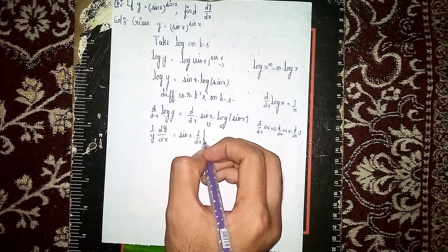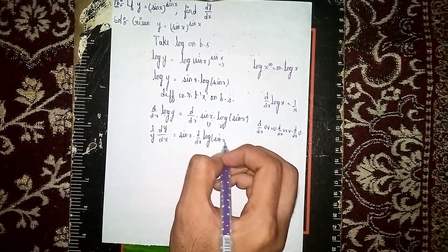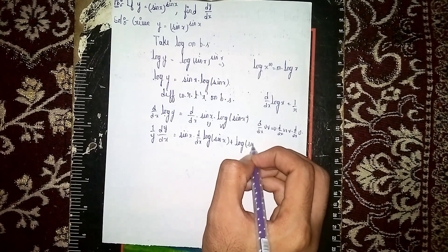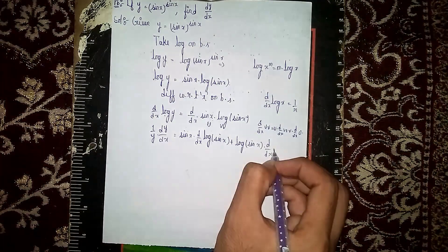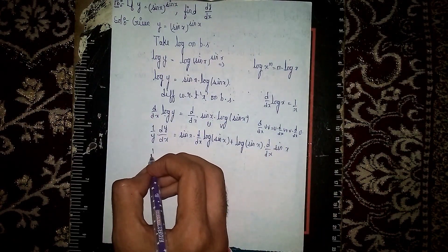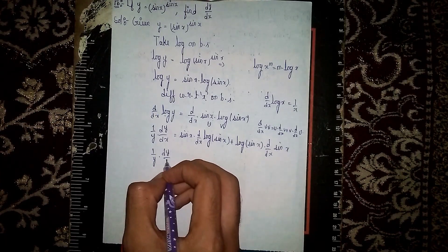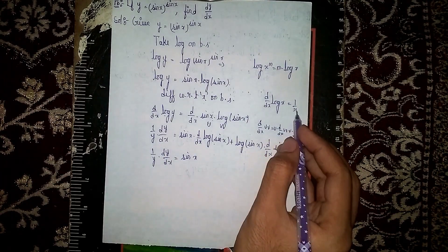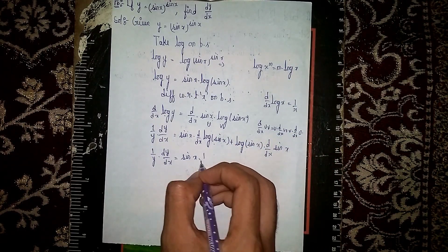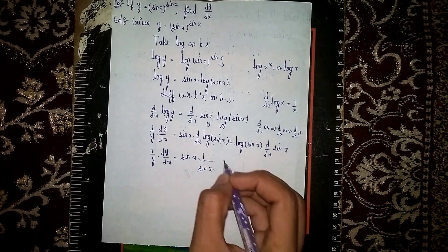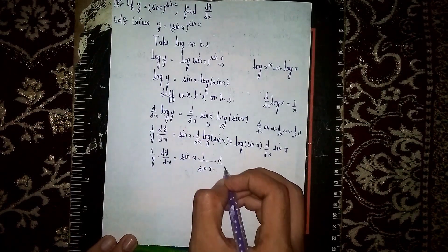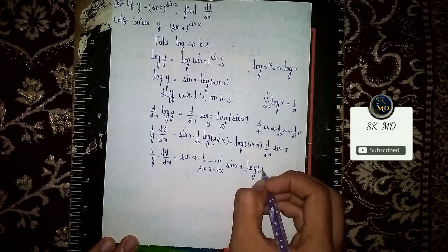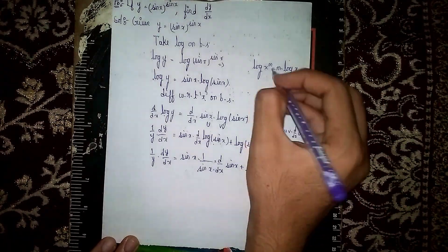Applying the product rule: sin(x)·d/dx(log(sin x)) + log(sin x)·d/dx(sin x). For the first term, d/dx of log(sin x) gives 1/sin(x)·d/dx(sin x) by the chain rule. The second term uses d/dx(sin x) = cos x.